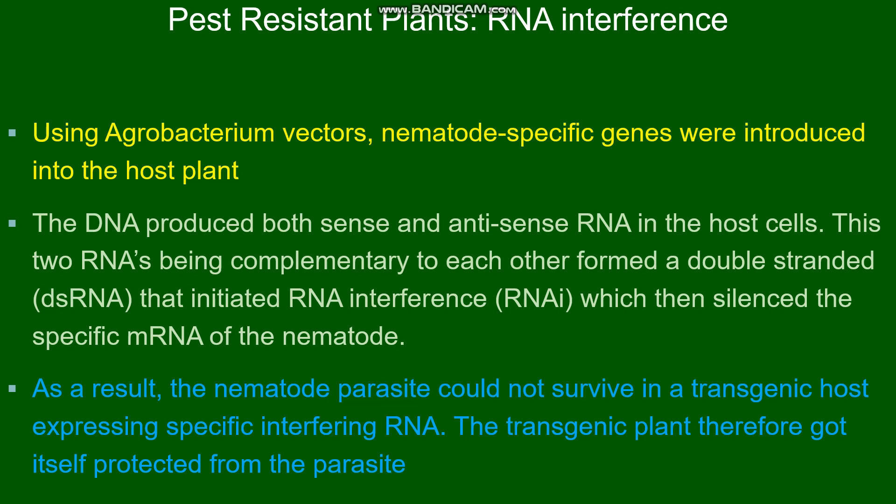This double-stranded RNA is the RNAi or RNA interference. As this RNA interference is present in the transgenic host tobacco plant, when the nematode infects the transgenic plant, the messenger RNA produced by the nematode is silenced by the double-stranded RNA of the host plant. As a result, the nematode cannot survive in the transgenic plant, and thereby the plant gets protected from the nematode.